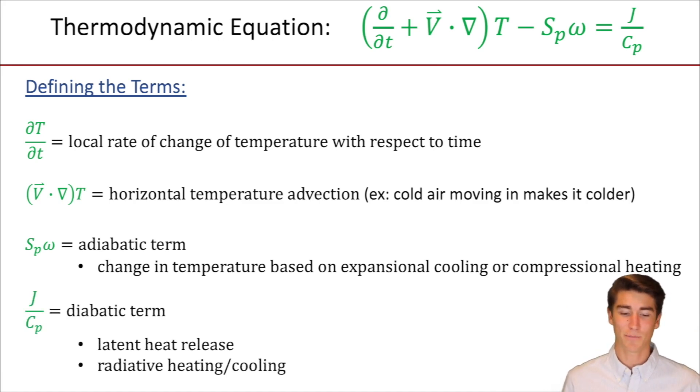J over cp is our diabatic term. This means latent heat release or radiative heating and cooling. What's latent heat release? Well, let's say you have a bunch of water vapor in our parcel, and then some of that water vapor condenses and forms a raindrop. Well that's actually going to release heat into the atmosphere around it, warming our parcel of air.